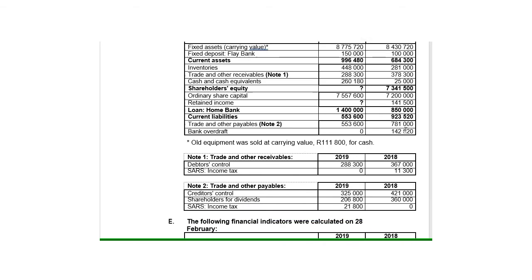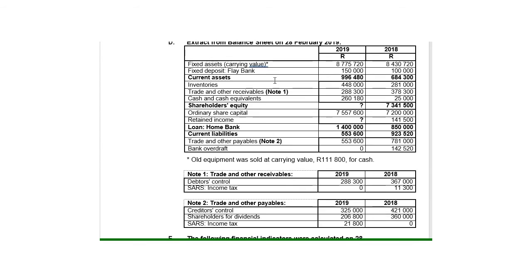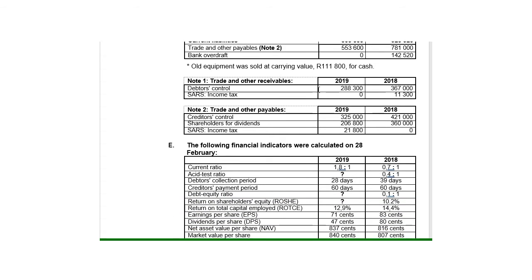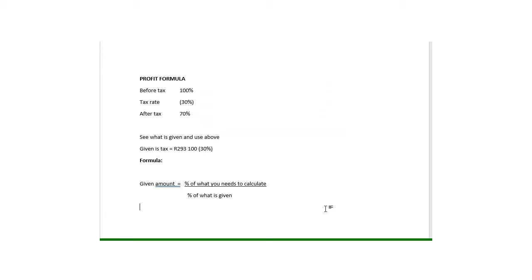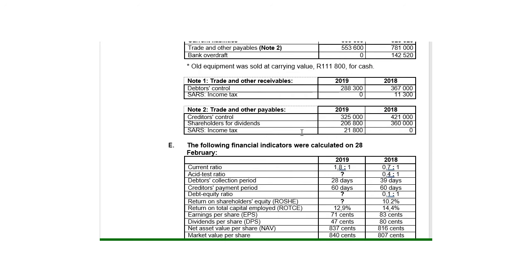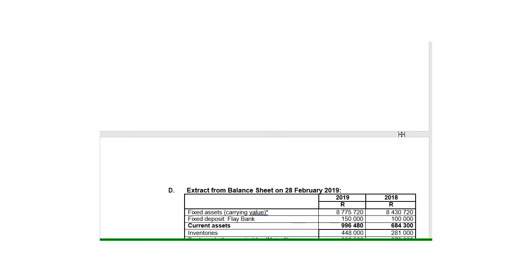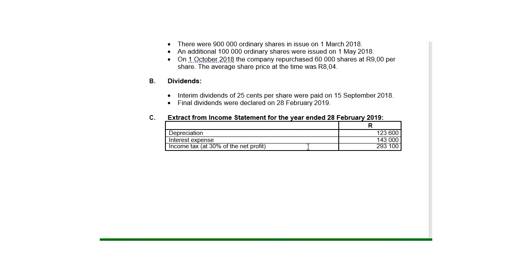After that I need to look for the net profit after tax. To do that I must go and see what they give me in terms of either the profit or the tax. It won't be in the extract from the balance sheet — income tax amounts will be in either receivables or payables. If it is a receivable it means it's an asset with a debit balance; in payables it will have a credit balance. In this case they give me the income tax and the percentage — the tax is 30%, so they give me the tax of 293,100 and that is 30%.